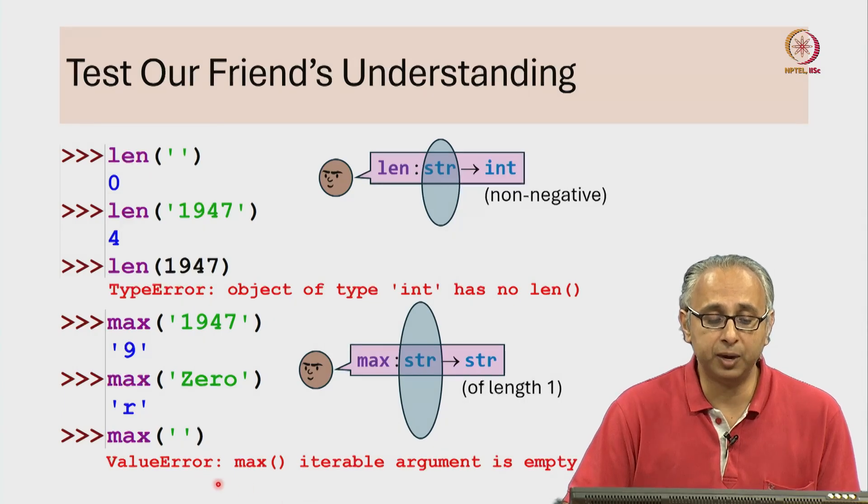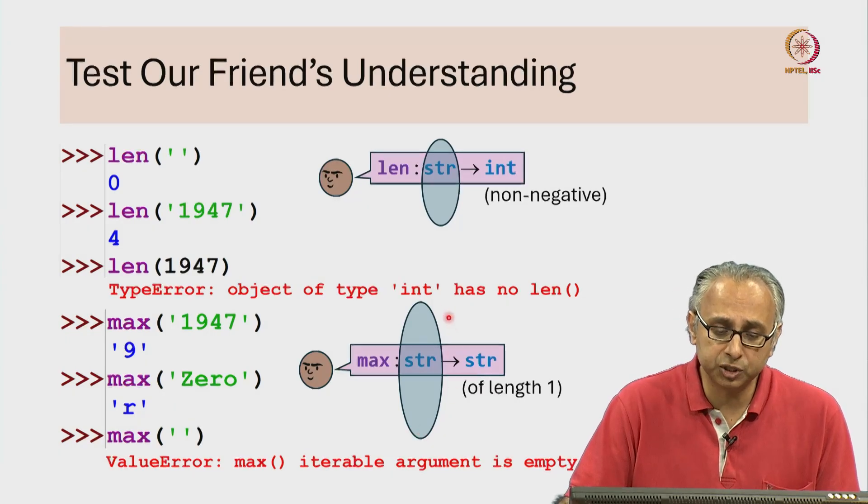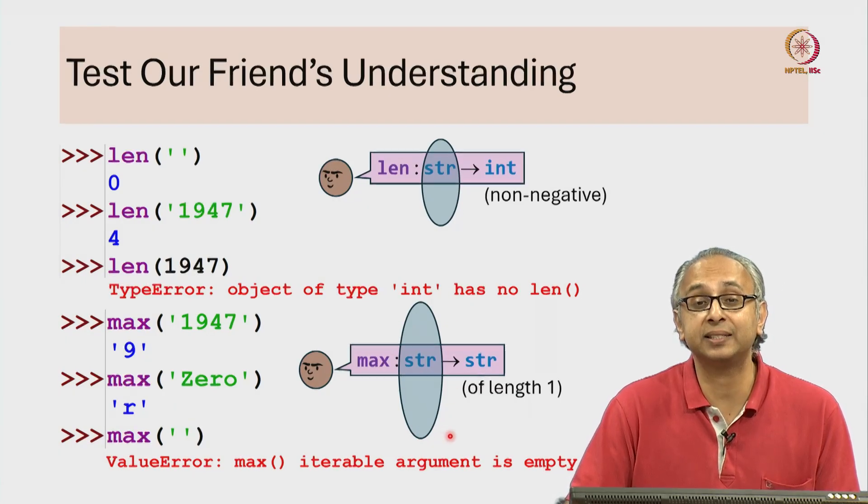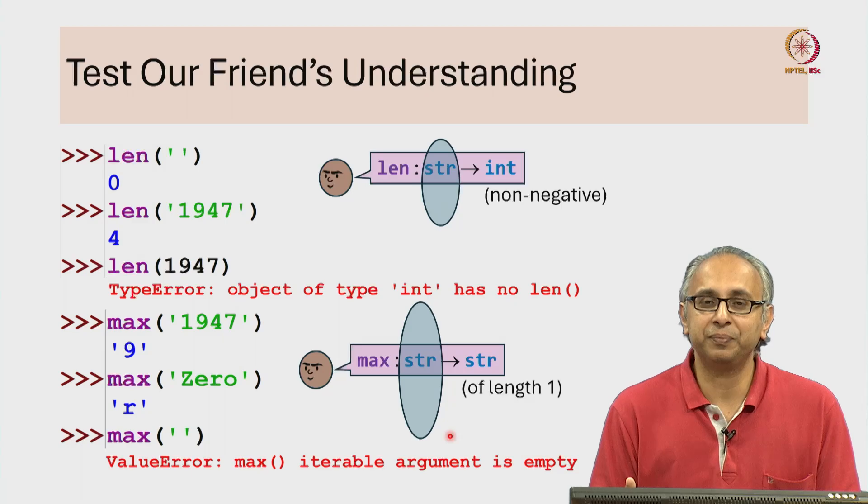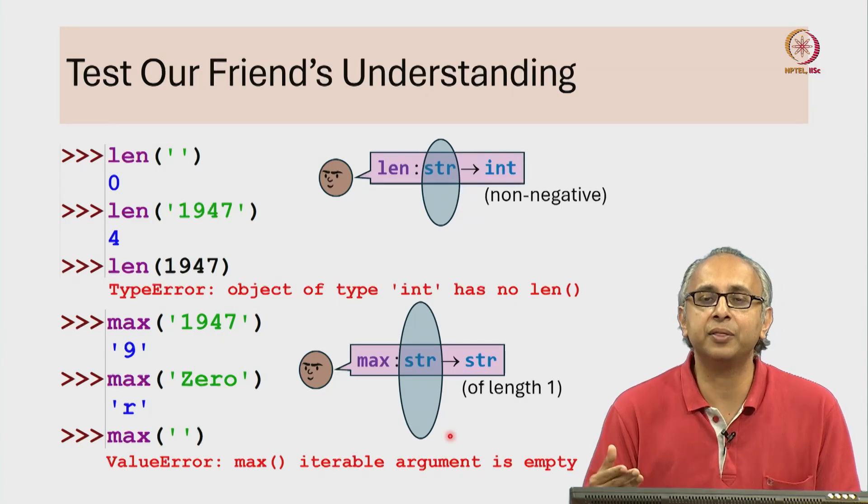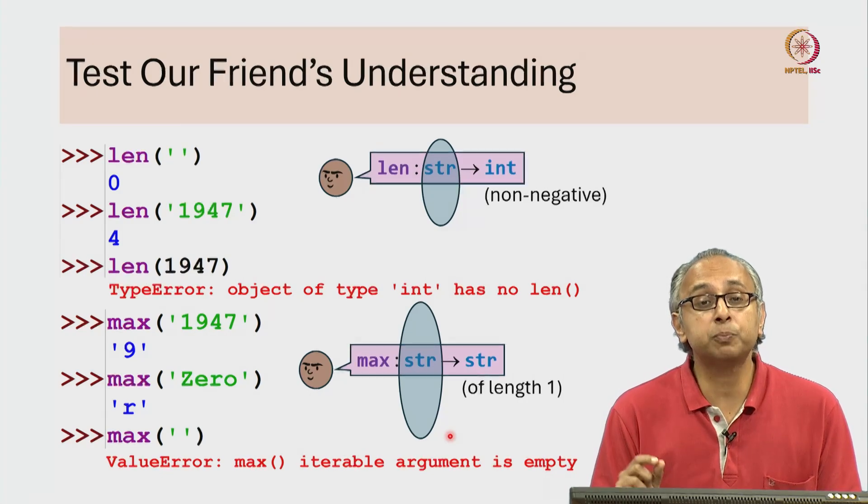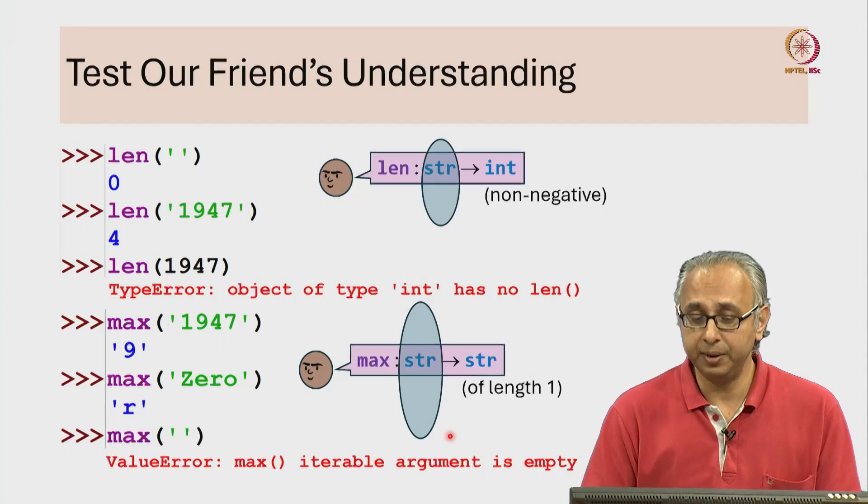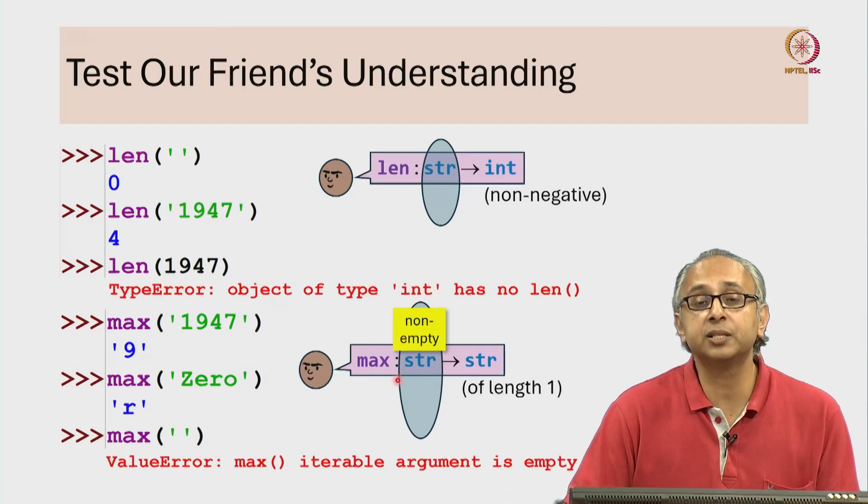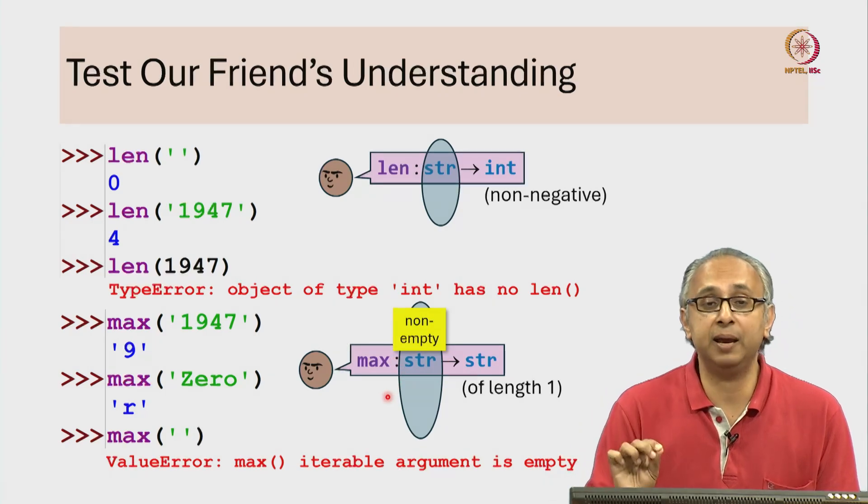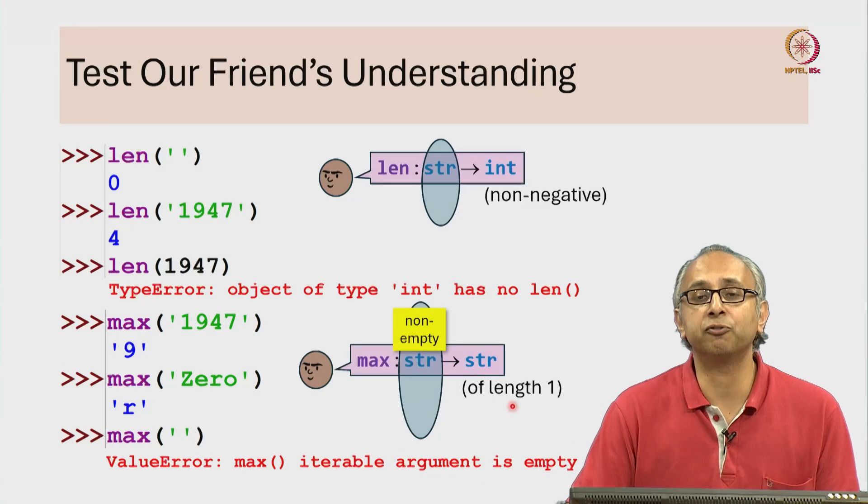It produces what's called a value error. It says max iterable argument is empty. So it turns out this broader set of inputs that the max function can accept is what we call the set of iterables. So far, the only iterable we have seen are strings. It turns out there are many other iterables, so we will come across this term later on. This error is telling us that you must provide the max function with some iterable that is non-empty. So even if we just think in terms of strings, the max function can only accept a non-empty string and then given the non-empty string, it will produce a string of length 1.